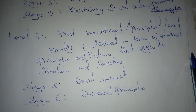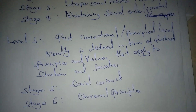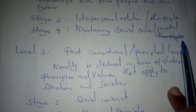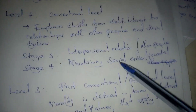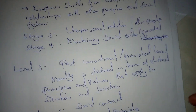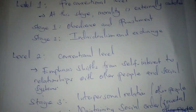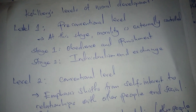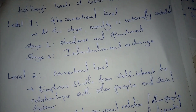So those are the three levels: level one has the first two stages, level two has stages three and four, and level three has stages five and six. That is Kohlberg's levels of moral development.